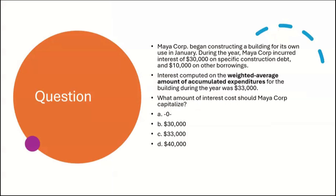Interest before construction and interest after construction would be expensed — it's only the interest during construction that could be capitalized. Let's try this. Maya Corp began constructing a building for its own use in January, so construction has begun. During the year, Maya Corp incurred interest of $30,000 on specific construction debt and $10,000 on other borrowings. Interest computed on the weighted average amount of accumulated expenditures for the building during the year was $33,000. What amount of interest cost should Maya Corp capitalize?